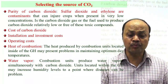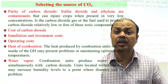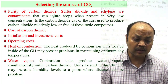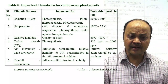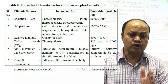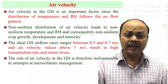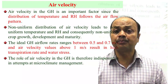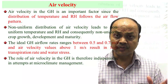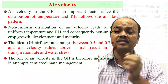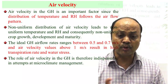At one end you are getting additional CO2, but if combustion adds heat, you need greenhouse cooling. You must also consider how much water vapor the combustion adds inside the greenhouse. A summary table of important climatic factors influencing plant growth is presented — the roles and desirable ranges of light, temperature, and humidity are given. Air velocity in the greenhouse is an important factor since distribution of temperature and RH follows air flow patterns.